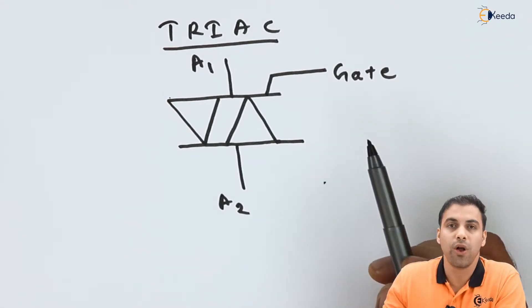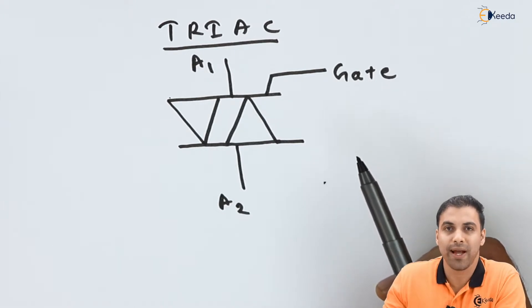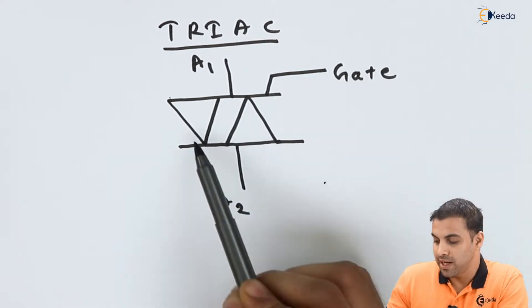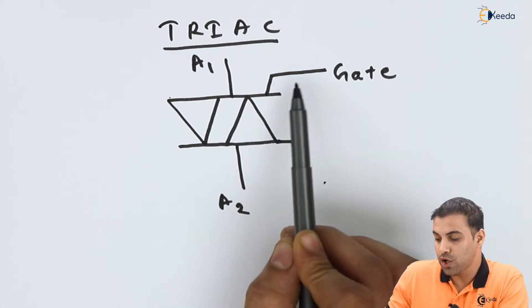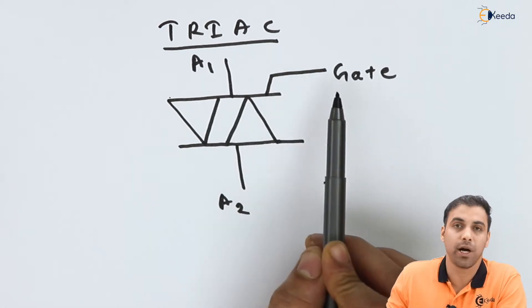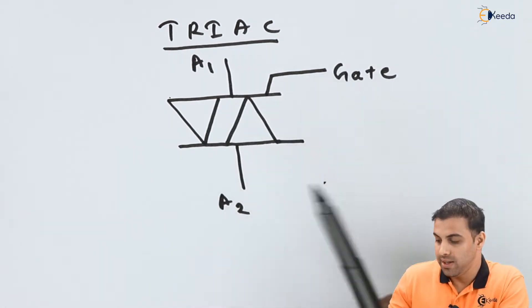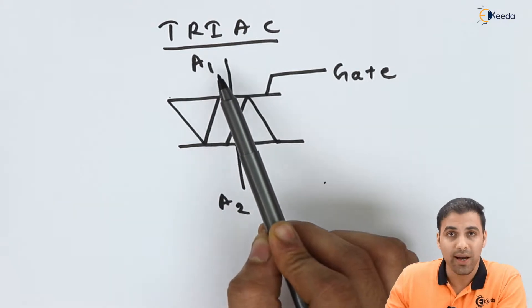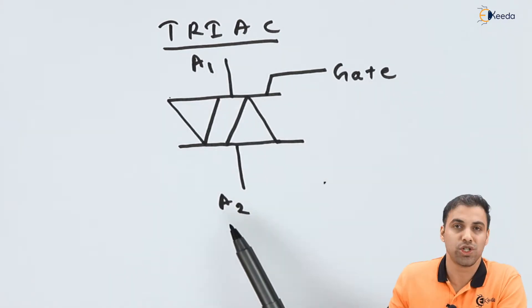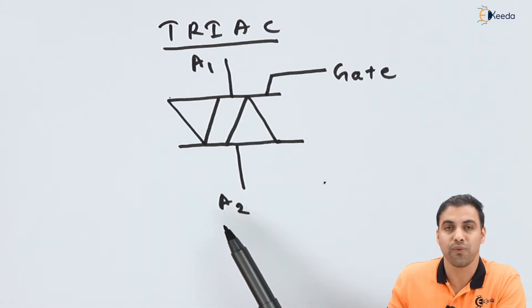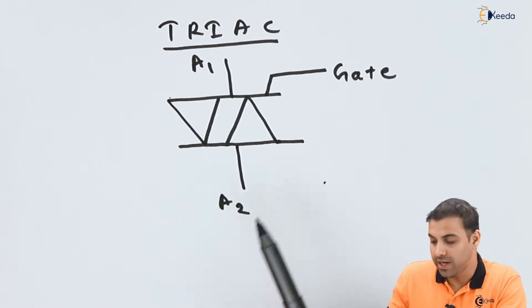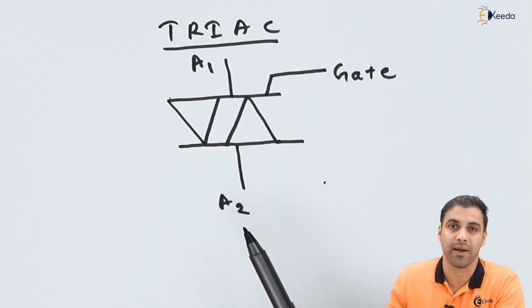As you can see the symbolic diagram of a TRIAC, there are two thyristors, and this is a common gate terminal, and A1 is anode 1, and A2 is anode 2. Let's talk about how it is constructed and what is the working principle of a TRIAC.